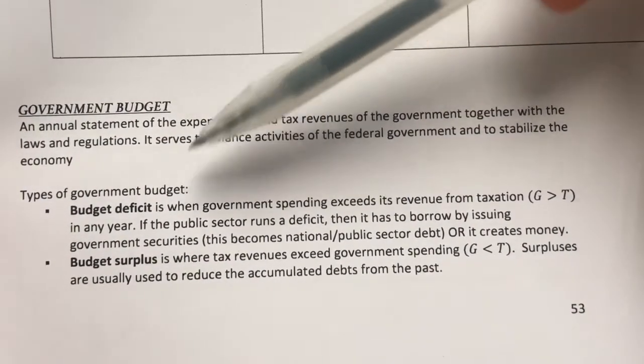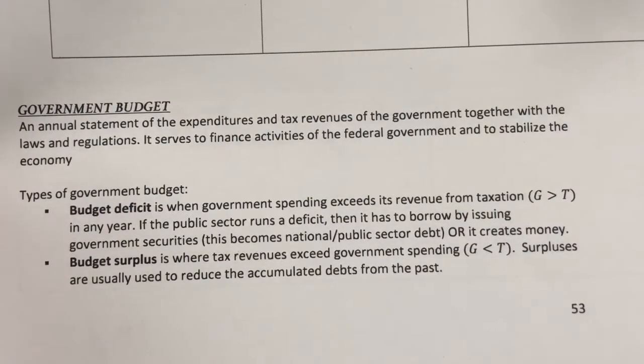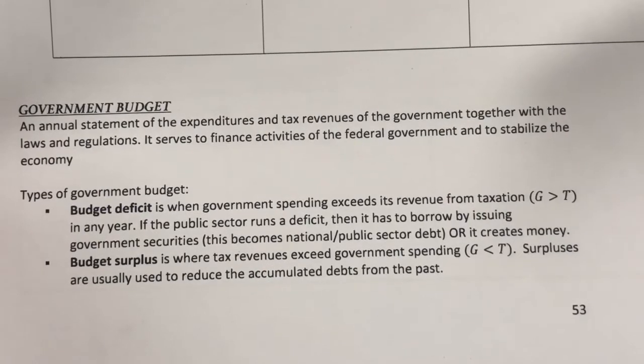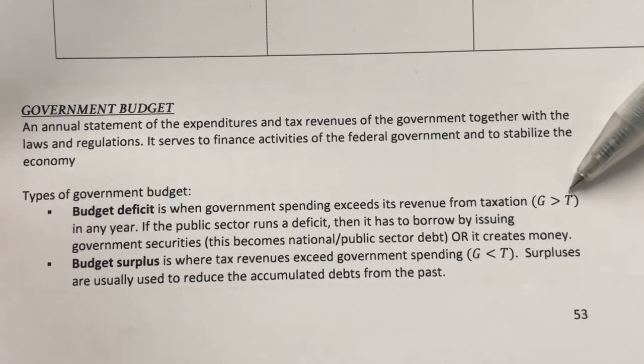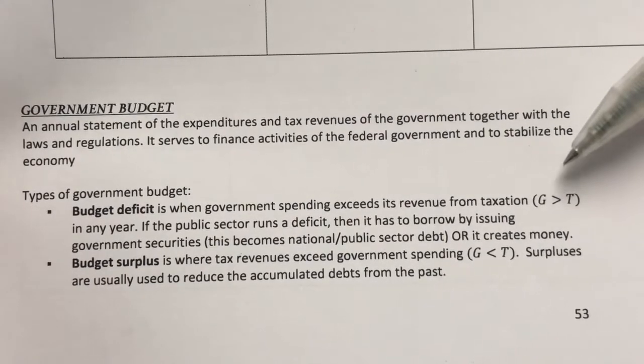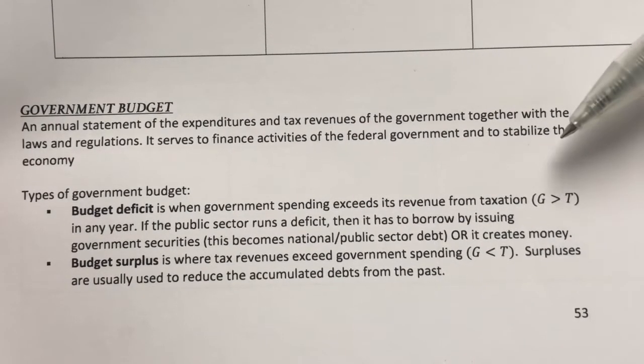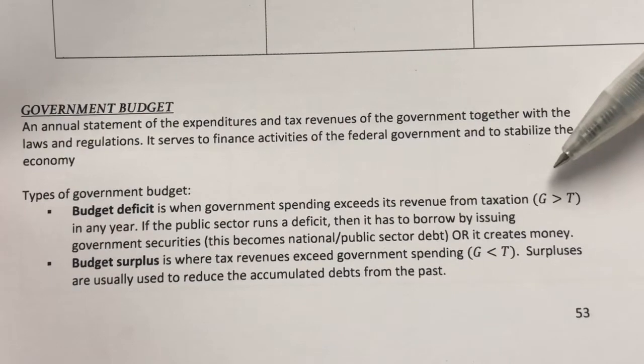A budget deficit is when the government spends more than it earns. In other words, government spending is more than taxation revenues. So when this happens, how would the government be financing its spending? There are several ways.